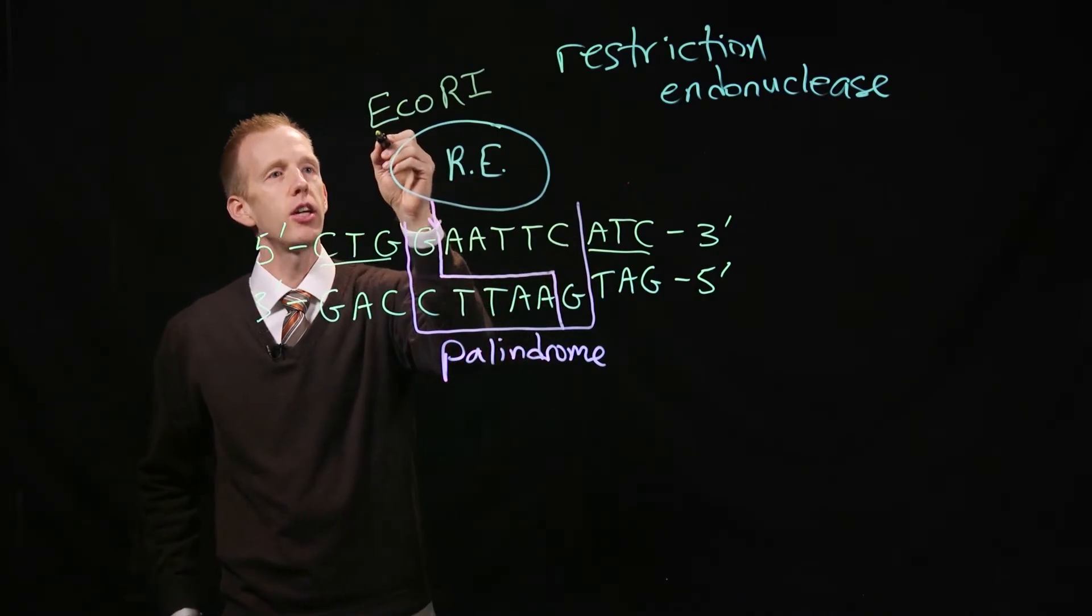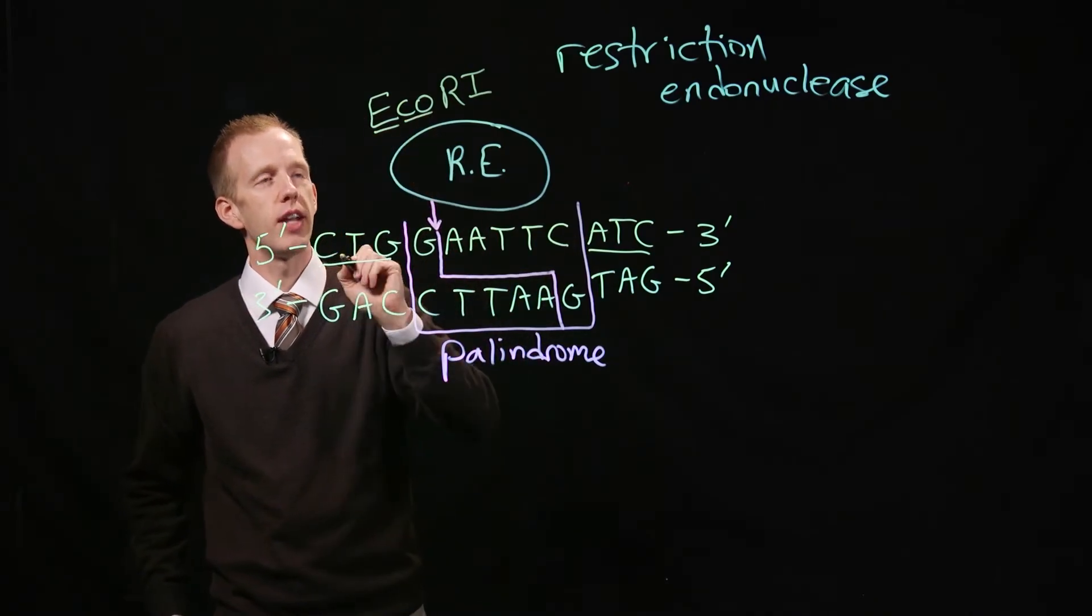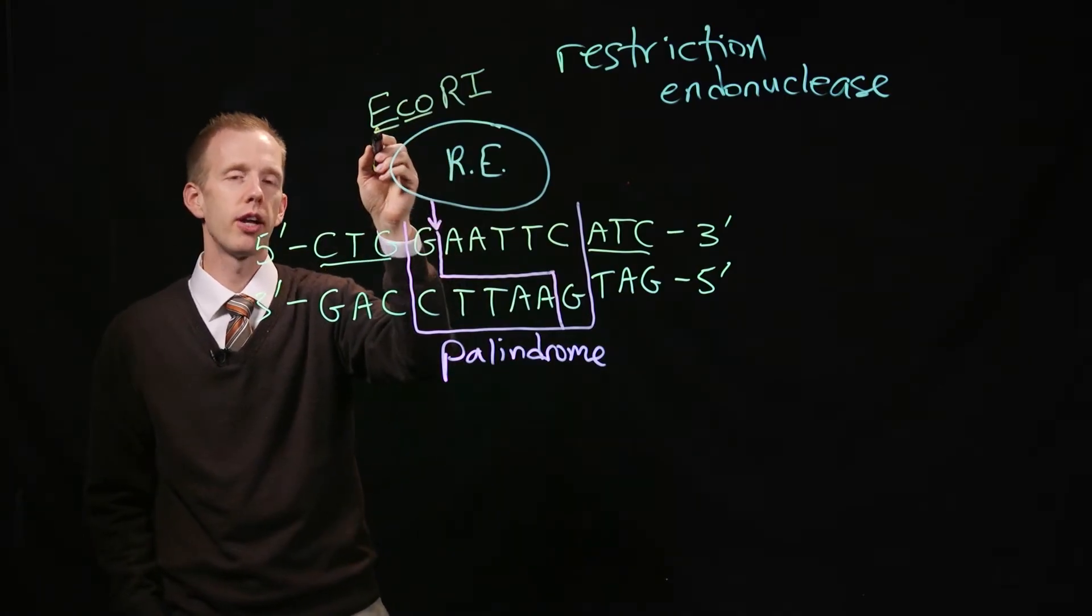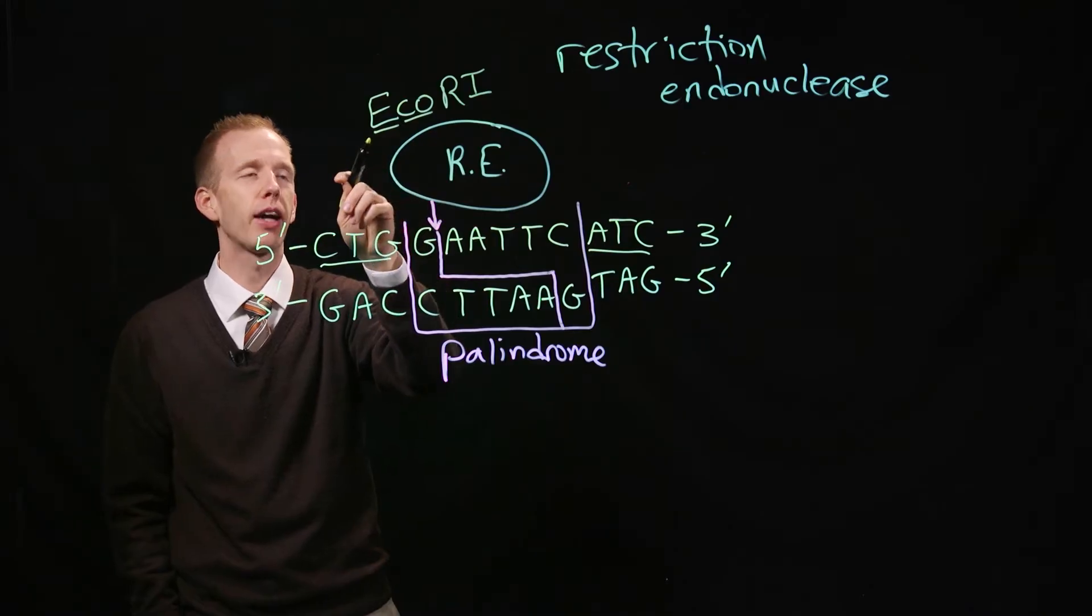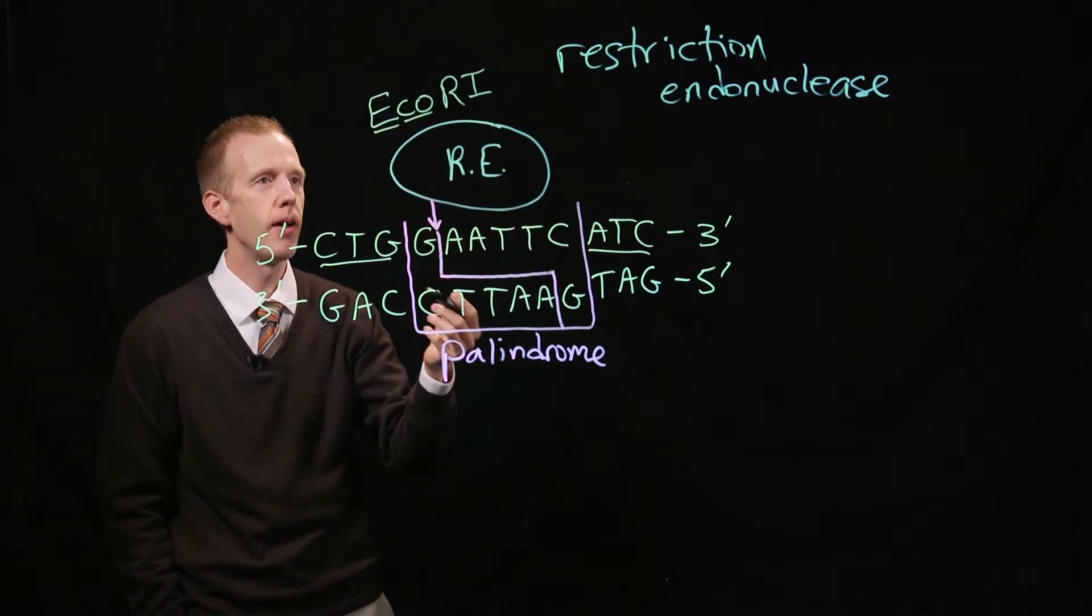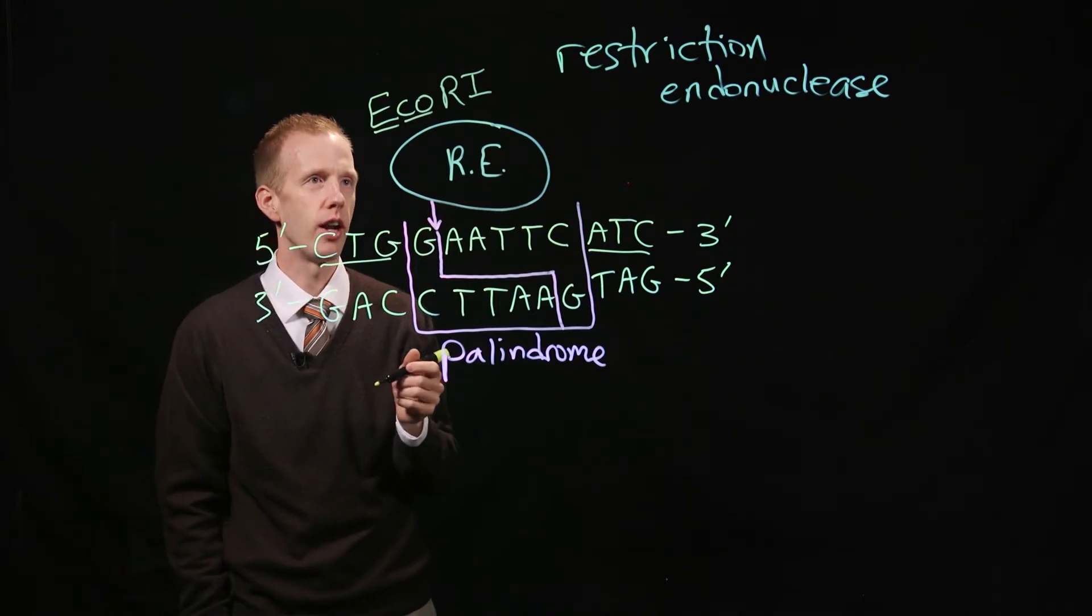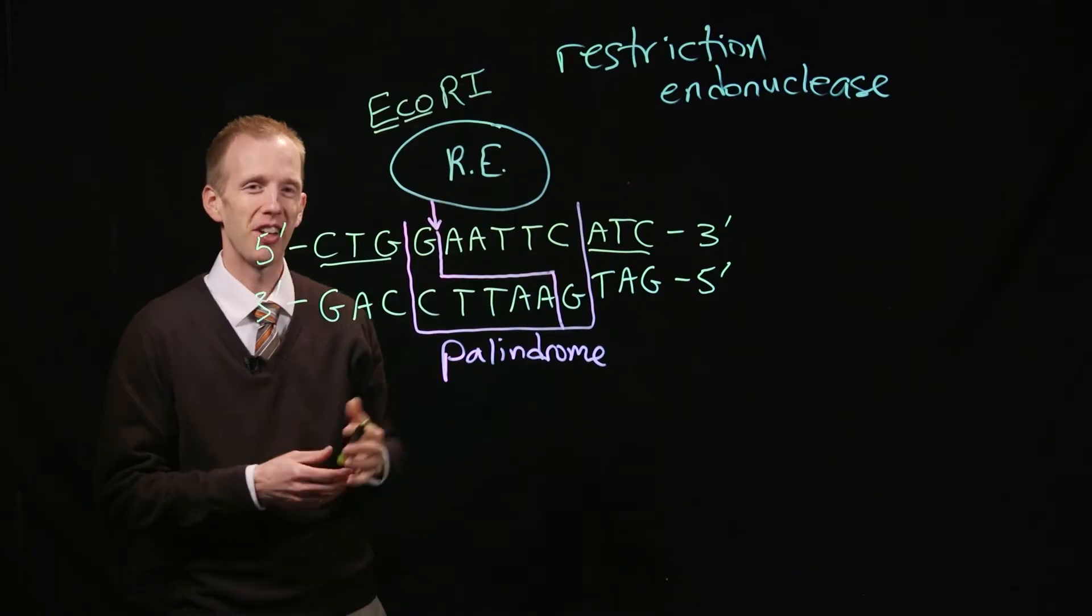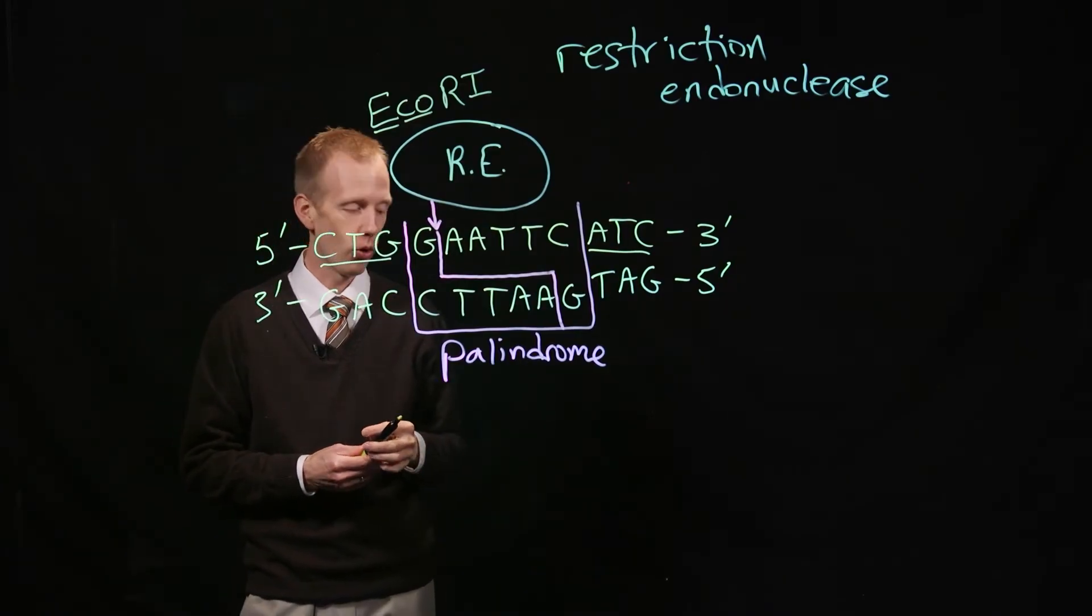EcoR1 is the enzyme that cuts out of G-A-A-T-T-C. EcoR1 is named after the bacterium it was isolated from, E. coli. The first letter represents the genus name, and the second two letters, C and O, come from coli. That's how restriction enzymes are named. R for restriction enzyme, and 1 presumably being the first such enzyme isolated from E. coli.